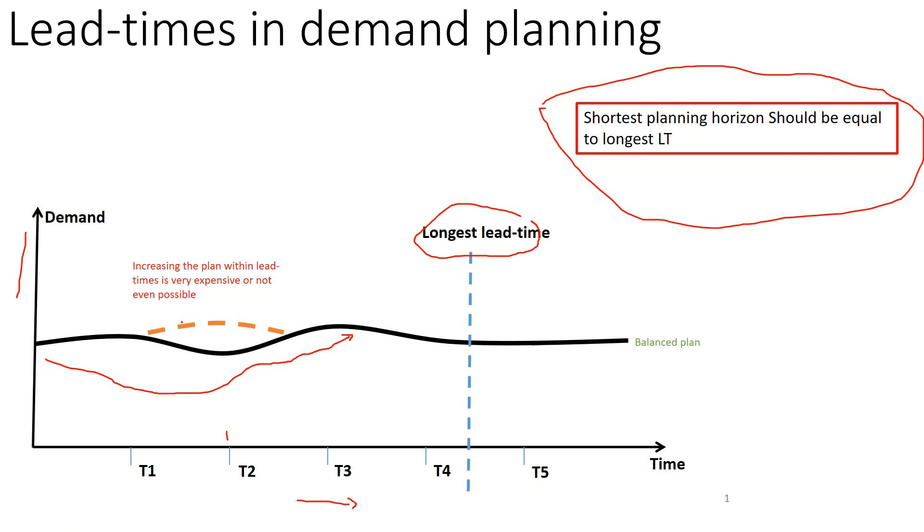This is your requested increase by the customer. Now since your longest lead time horizon is this and the increase is within this lead time horizon, you actually cannot increase the demand here. Even if you increase, you cannot support because you will not get this component on time, and even if you accept it, you can't produce. It's very simple logic.